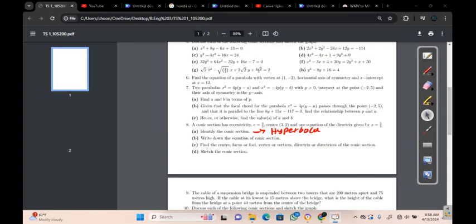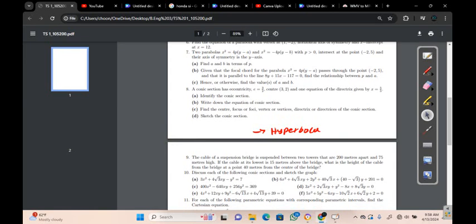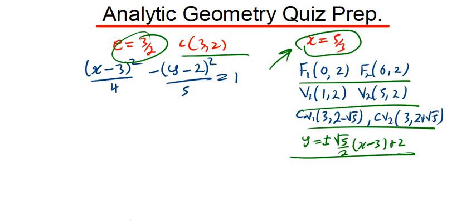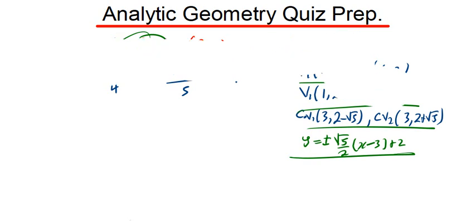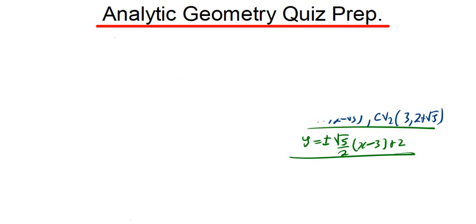Let's look at question 9. It says the cable of a suspension bridge is suspended between two towers that are 200 meters apart and 75 meters high. If the cable at its lowest is 15 meters above the bridge, what is the height of the cable from the bridge at 40 meters from the center?